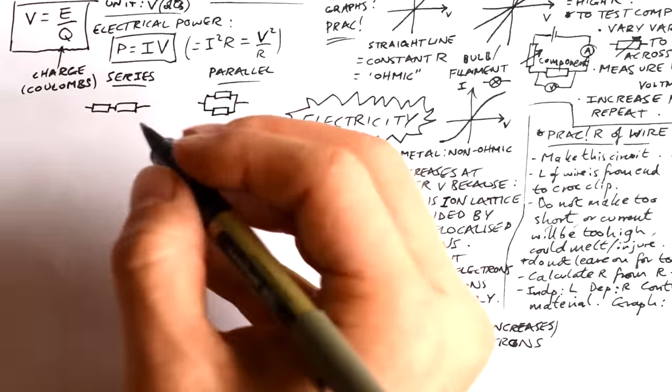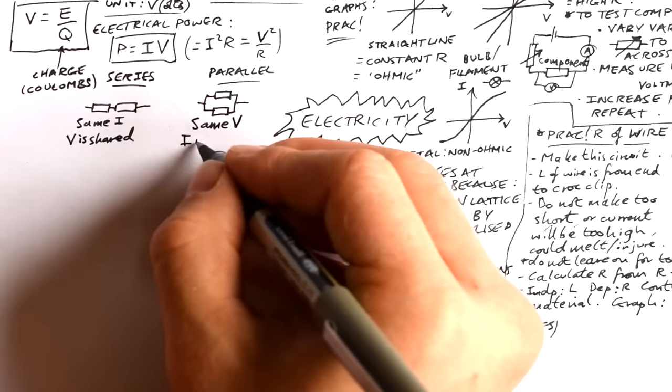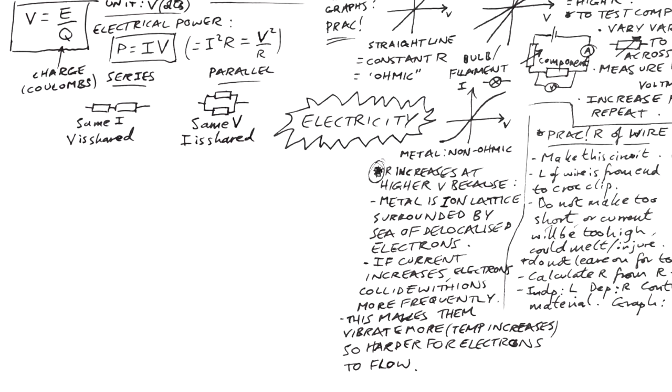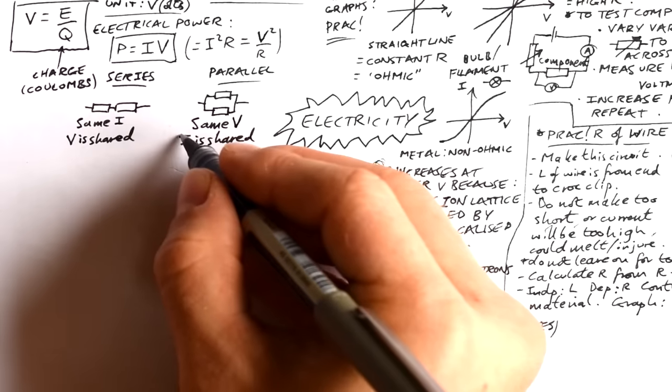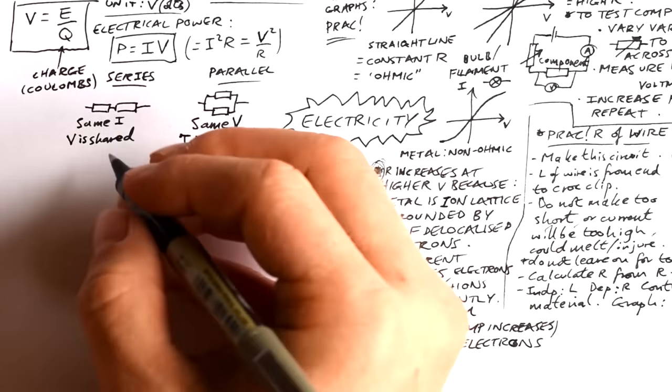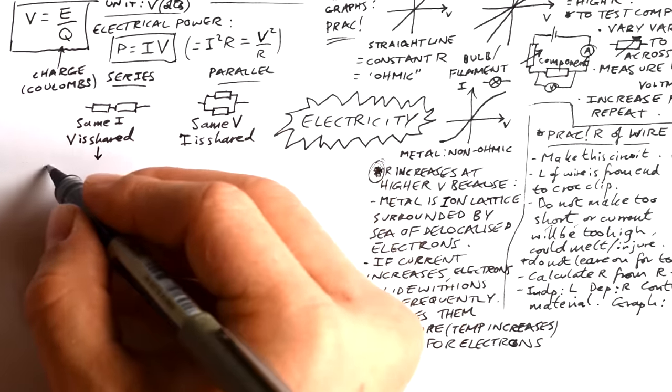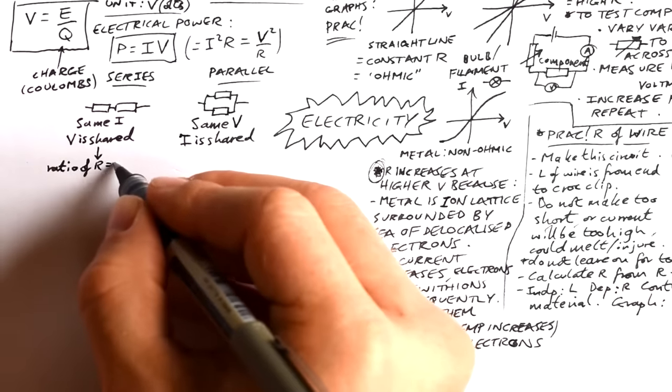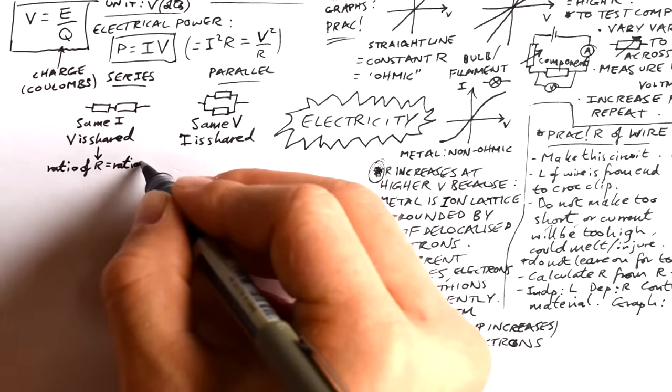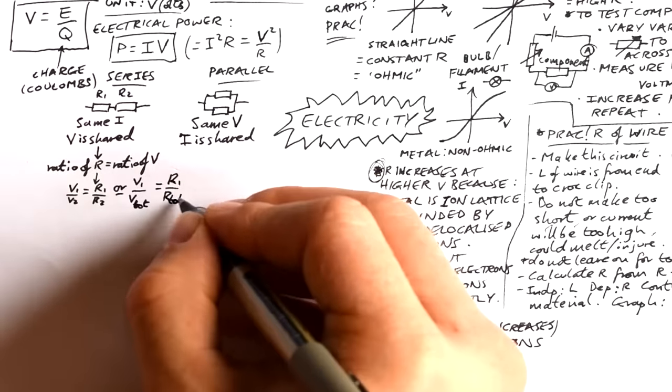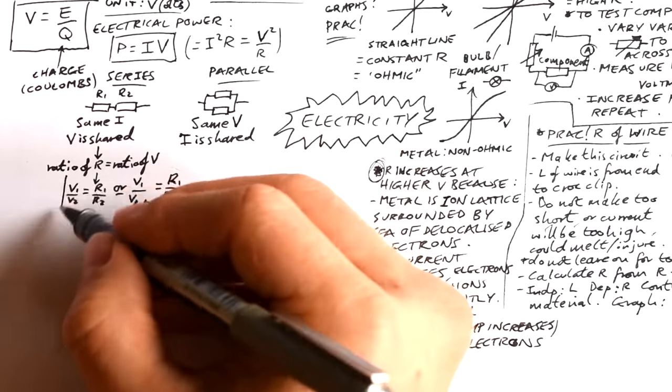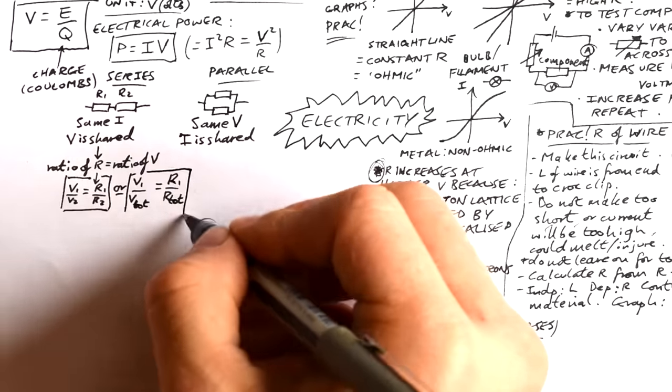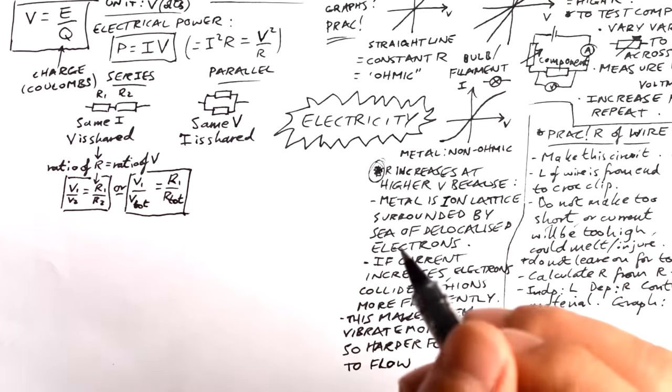If you have components in series, they must have the same current, but the total voltage, total PD is going to be shared. Parallel circuits is the opposite way around. They're going to have the same voltage, same PD, but the current is shared. Now, when we have two components in series, we can call that a potential divider, just because the potential is shared. In this case, the ratio of the resistances is equal to the ratio of the voltages across them. In other words, the bigger resistor will have the bigger share of voltage. So therefore, we can say that for two components, V1 over V2 equals R1 over R2, or V1 over the total V is equal to R1 over the total R. Of course, that works for V2 and R2 as well.